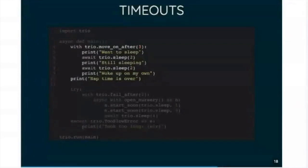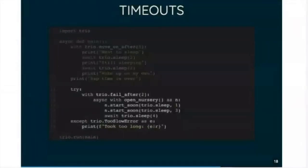The next one is fail after, which is the same as move on, except instead of just moving on, it actually fails. So this example also has a nursery. Because the nursery is inside the timeout block. The timeout applies to all the subtasks and the body of the nursery. And because we use fail, we get an exception if we take too long.